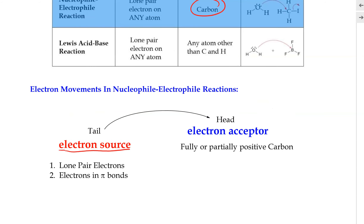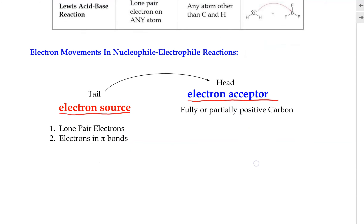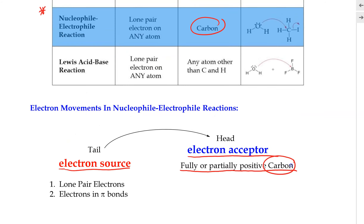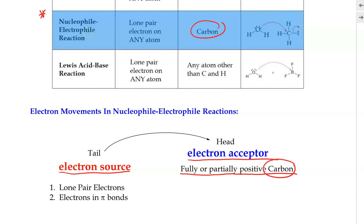The electron donor will then move toward all the sites serving as the electron acceptor. The electron acceptors are basically atoms bearing a fully or partially positive charge. In this case, our emphasis is on the carbon, since we are discussing the nucleophile and electrophile types of reaction.